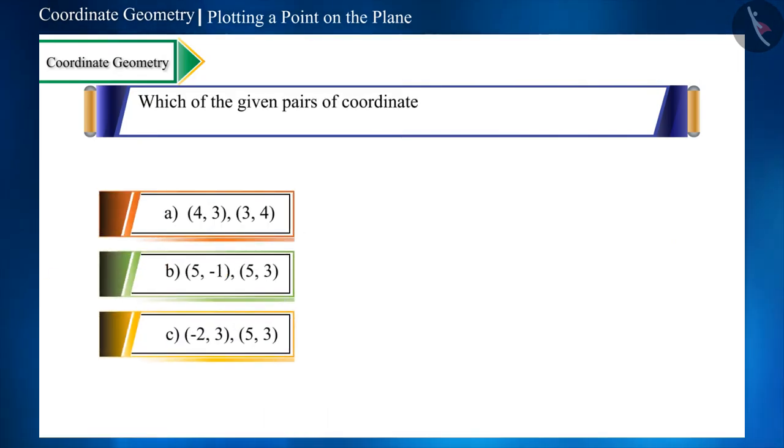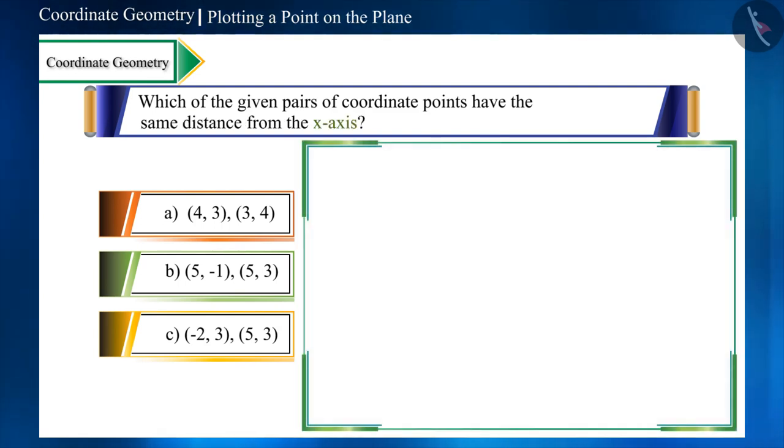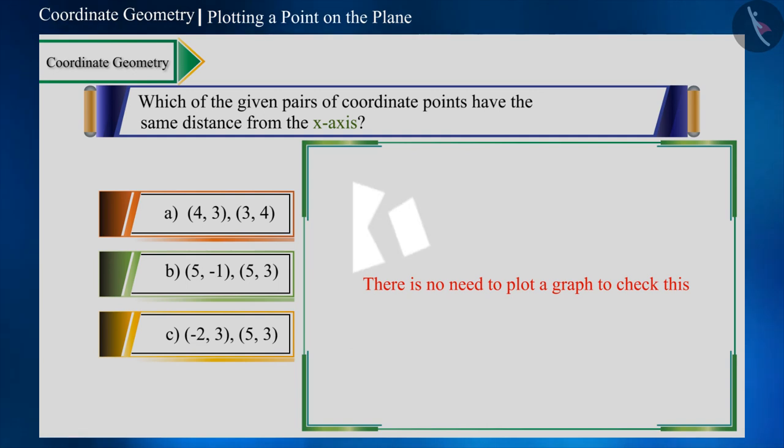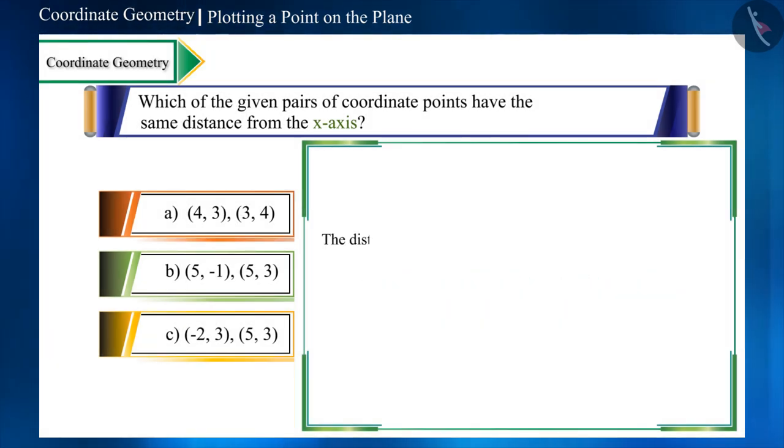Let me give you a hint: you do not need to plot and check the graph. You can pause the video to think of an answer first. Let us consider some basics. The distance of any point from the X-axis is its Y-coordinate. That is, the pair whose Y-coordinates are the same will be at the same distance from the X-axis.